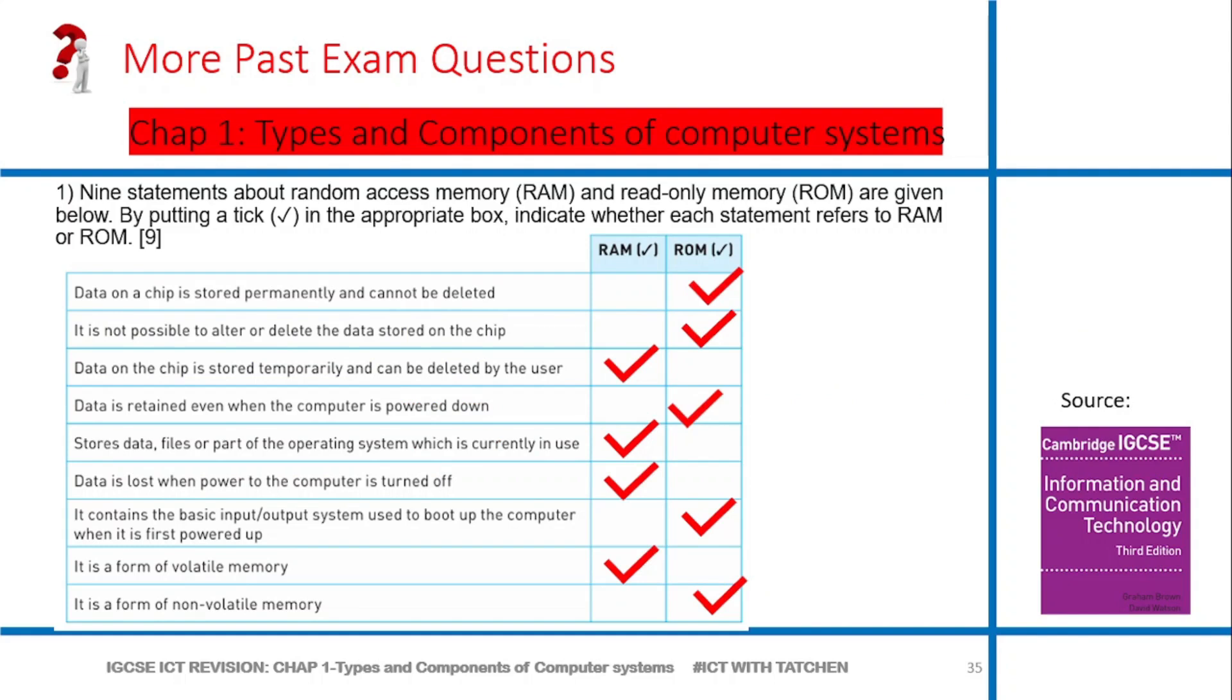The first question is nine statements about random access memory and read-only memory are given below. This is a very simple type of question you shouldn't miss marks on. This question is from the end of Chapter 1 from the IGCSE ICT textbook by Graham Brown and David Watson. The first question says data on a chip is stored permanently and cannot be deleted. Does this statement refer to RAM or ROM? RAM is volatile memory, meaning whenever you store data on it, once the computer goes off the data is lost, so it's like temporal storage, while ROM is permanent storage.